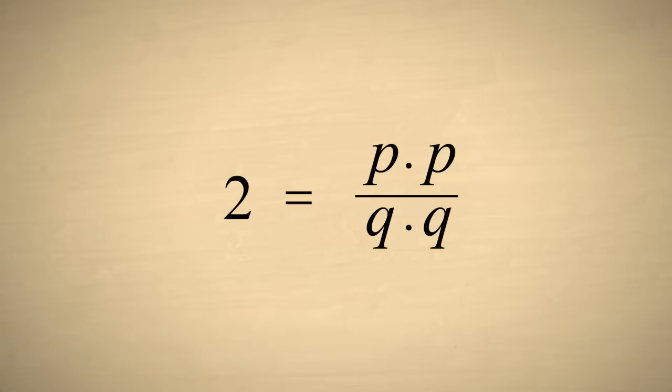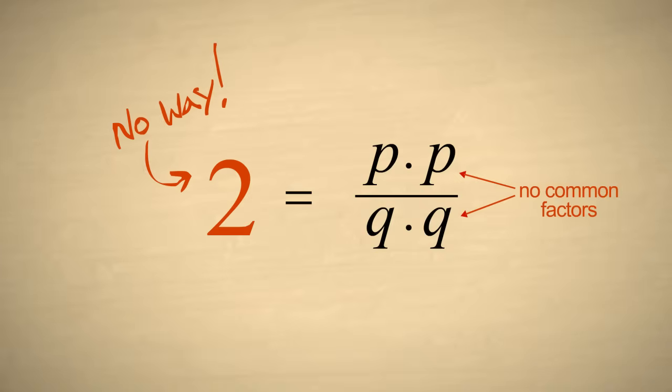But we also said that p and q have no common factors. Therefore, there are no factors in the numerator that are the same as any factor in the denominator. So we can't cancel any factors and there is no way that this fraction can be equal to two.